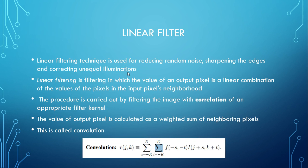The linear filtering technique is used for reducing random noise, sharpening edges, and correcting unequal illuminations. The value of an output pixel is a linear combination of the values of pixels in the input pixel's neighborhood. The procedure is carried out by filtering the image with correlation of an appropriate filter kernel. The output pixel value is calculated as a weighted sum of neighboring pixels, which is called convolution. The formula for convolution is shown on screen.